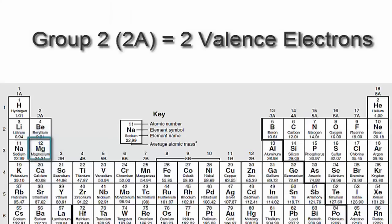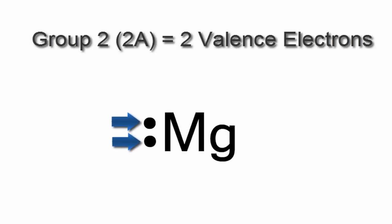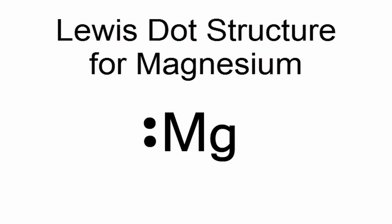So magnesium is in group 2 or 2A, and it has two valence electrons. We put those two valence electrons right next to the element symbol, Mg. And that's all there is to it. That's the Lewis dot structure for magnesium.